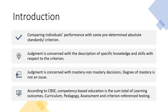The judgment in criterion reference interpretation is concerned with the description of specific knowledge and skills with respect to the criterion — not with the relative standing or position of students in a group. We are concerned with the absolute description of students' specific knowledge and skills. The third point is that judgment is concerned with mastery and non-mastery decisions — whether the student has mastered the content or not.